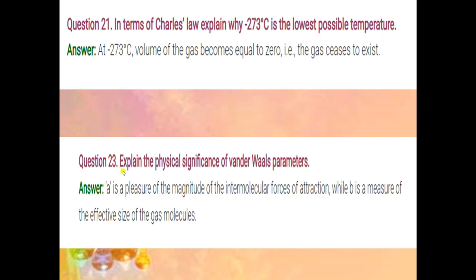Question number 23: explain the physical significance of Van der Waals parameters. In the Van der Waals equation we use parameters A and B. A is the measure of the magnitude of intermolecular forces of attraction, while B is the measure of the effective size of the gas molecules.